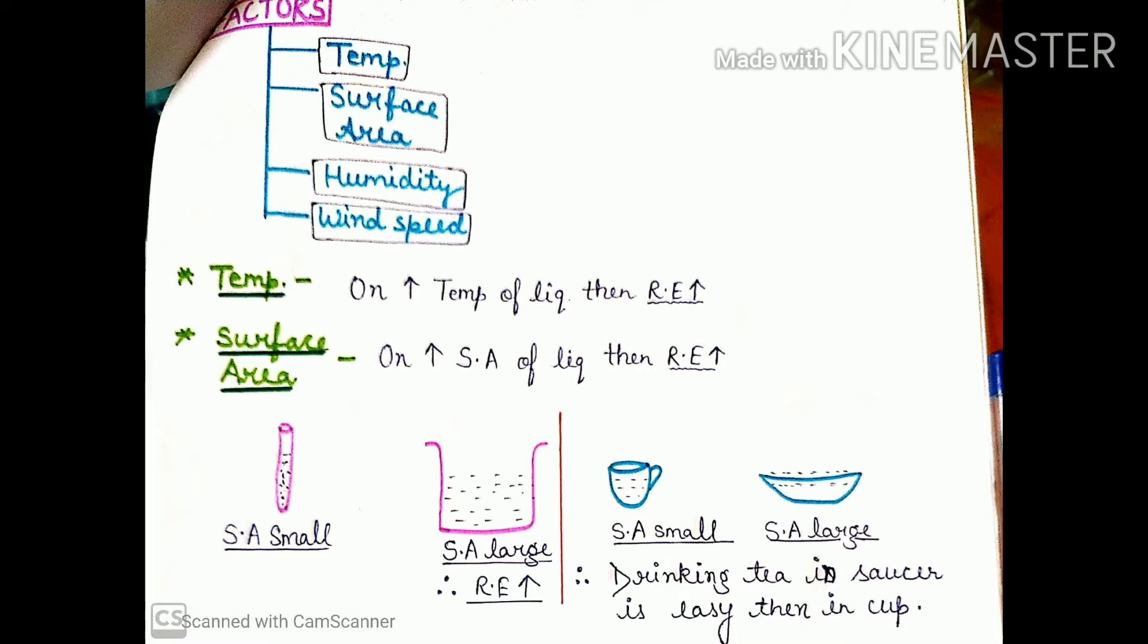You can see a common example from our daily life. In summer, rays of sun when they are strong, the temperature is higher. The clothes dry faster, meaning the rate of evaporation increases.